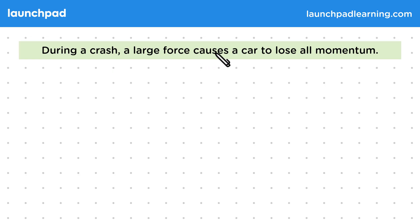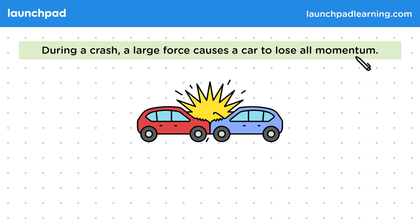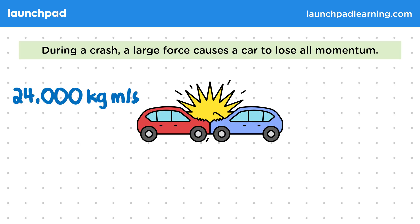During a crash, a large force causes a car to lose all momentum. Here we have two cars which have just been in a head-on collision. Before the crash, both cars had momentum, which is the product of their mass and their velocity. This would have been around 24,000 kgm per second for each car. As the crash causes the cars to stop, all of this momentum is lost, so the momentum is changing from 24,000 to zero. This happens because of the contact force between the two cars.